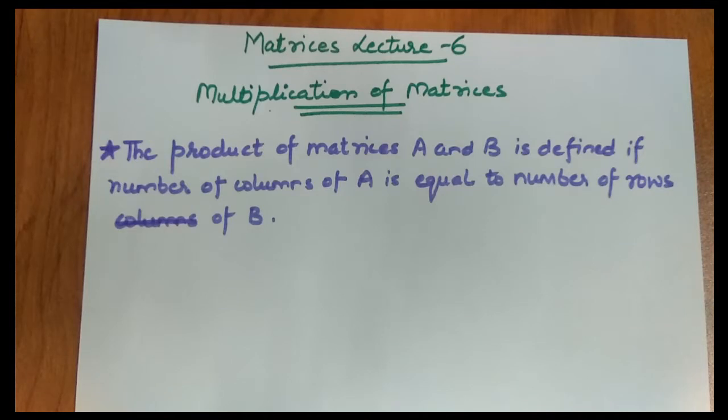Hello everyone, welcome back to my channel. In this video we will be covering the multiplication of matrices. Basically, I have written a definition: the product of matrices A and B is defined when the number of columns of matrix A equals the number of rows of matrix B, otherwise matrix multiplication is not possible.